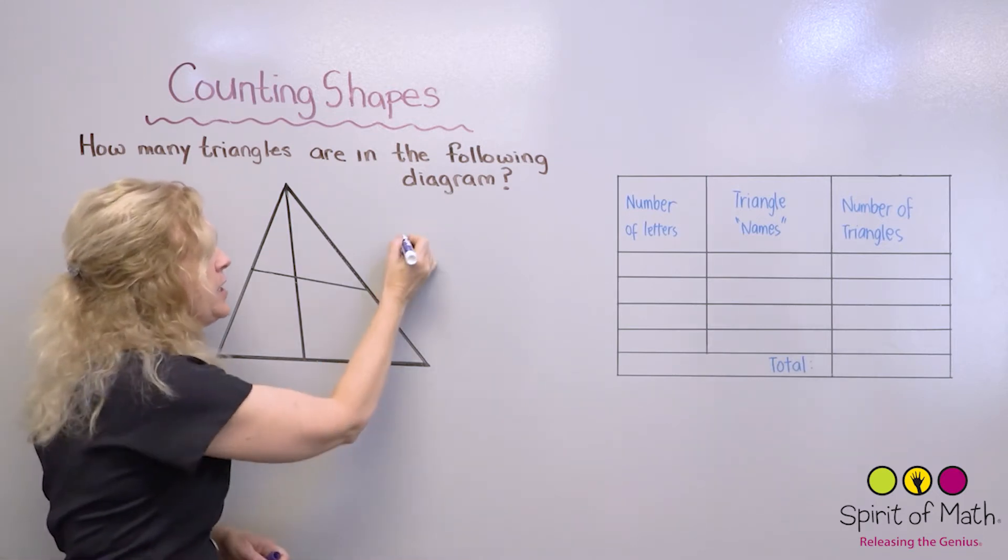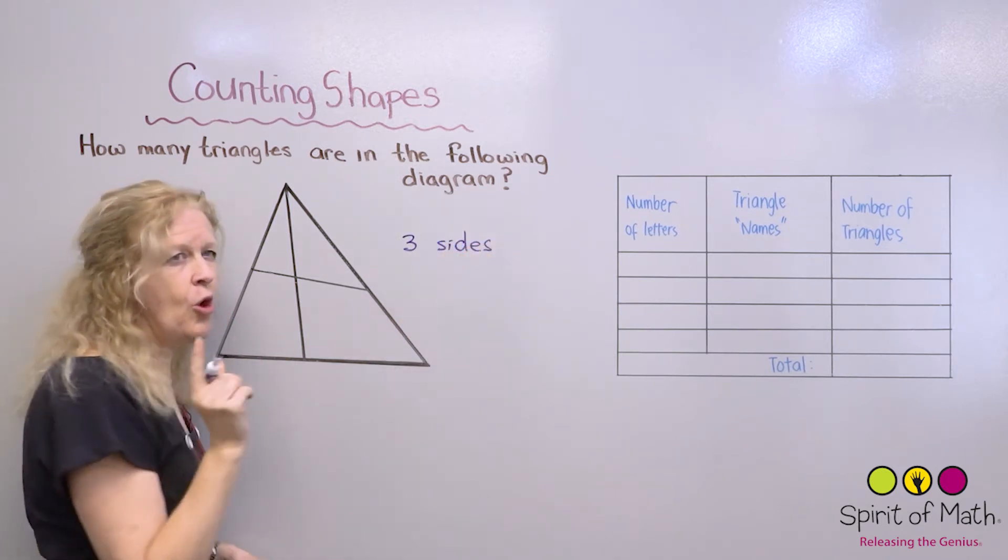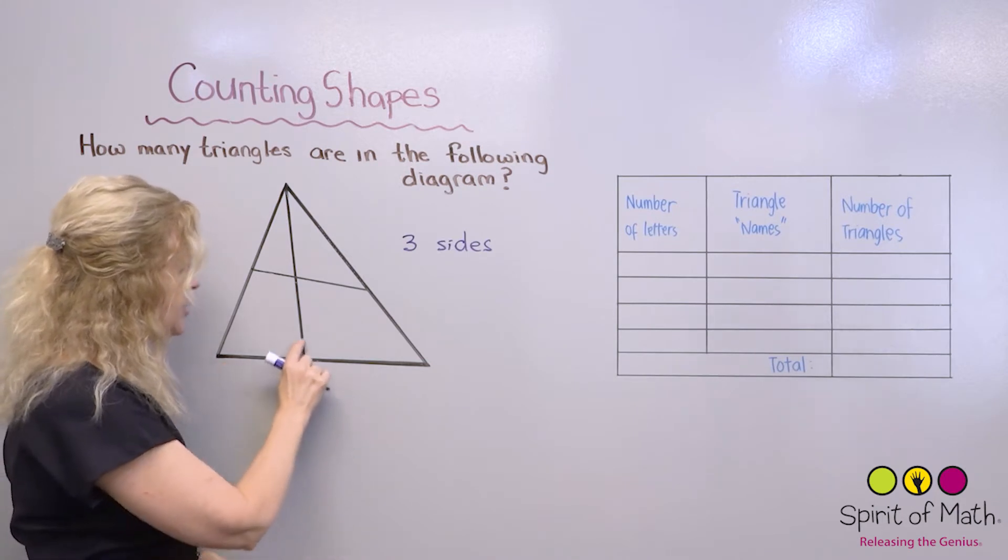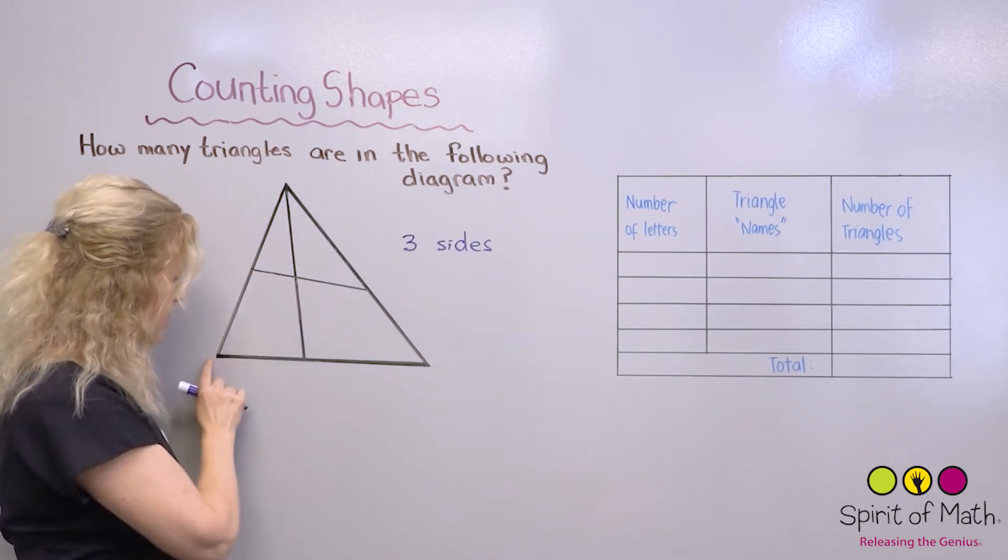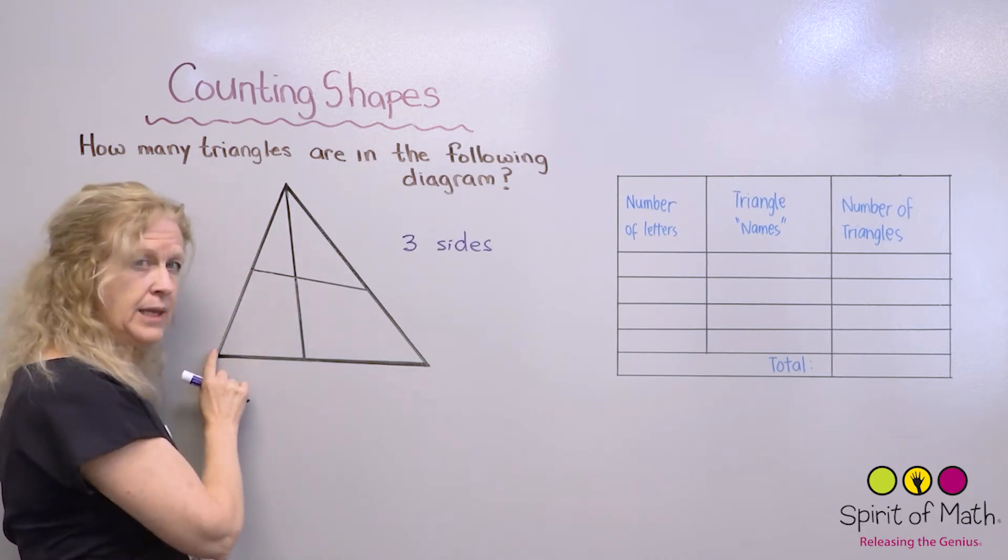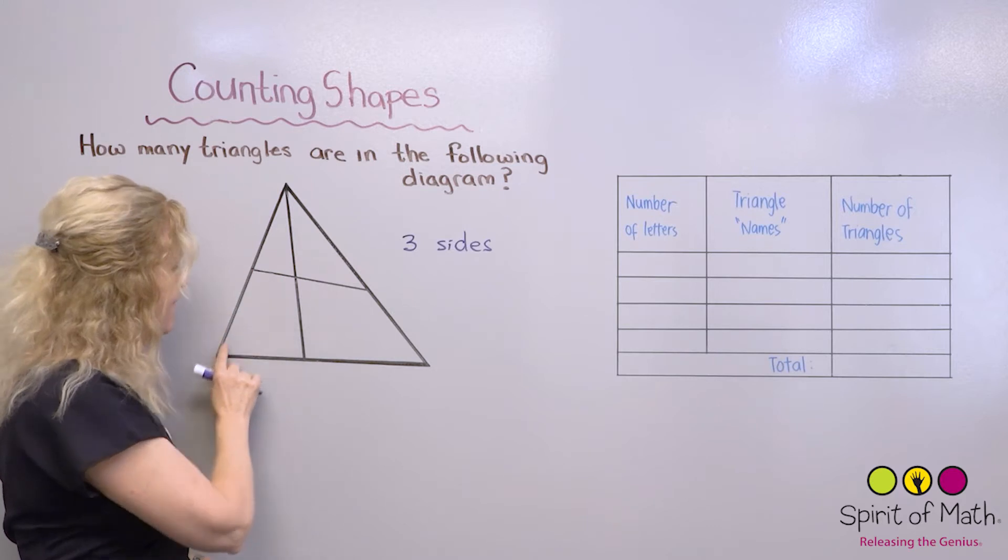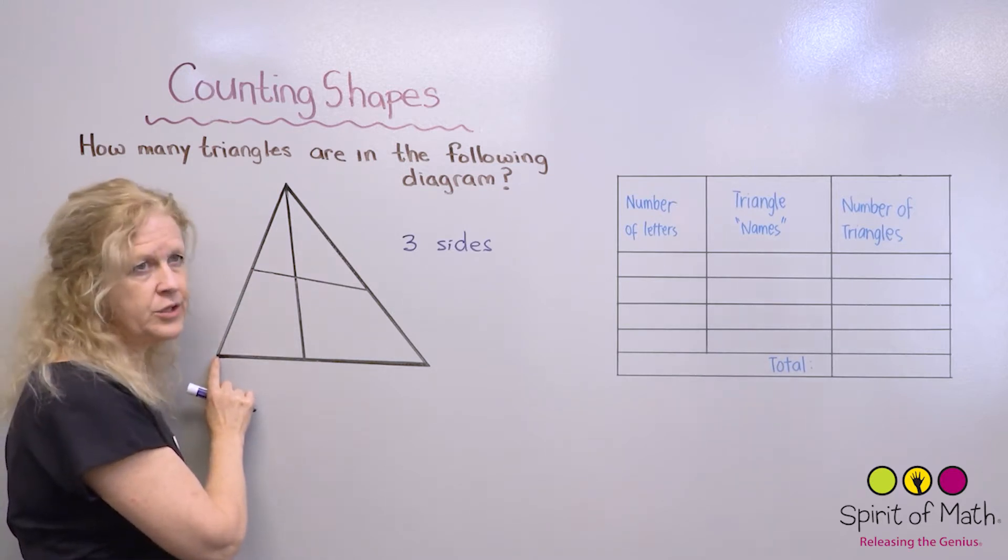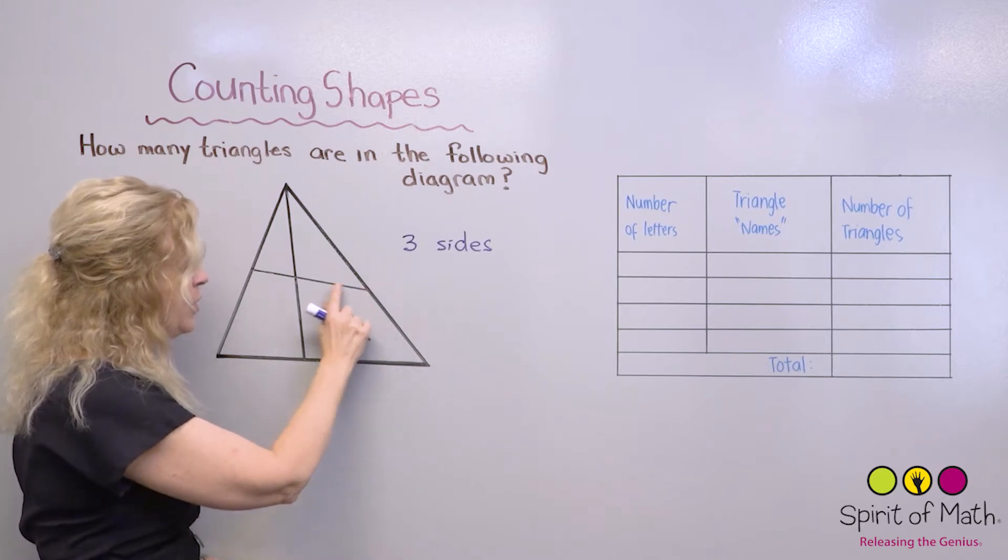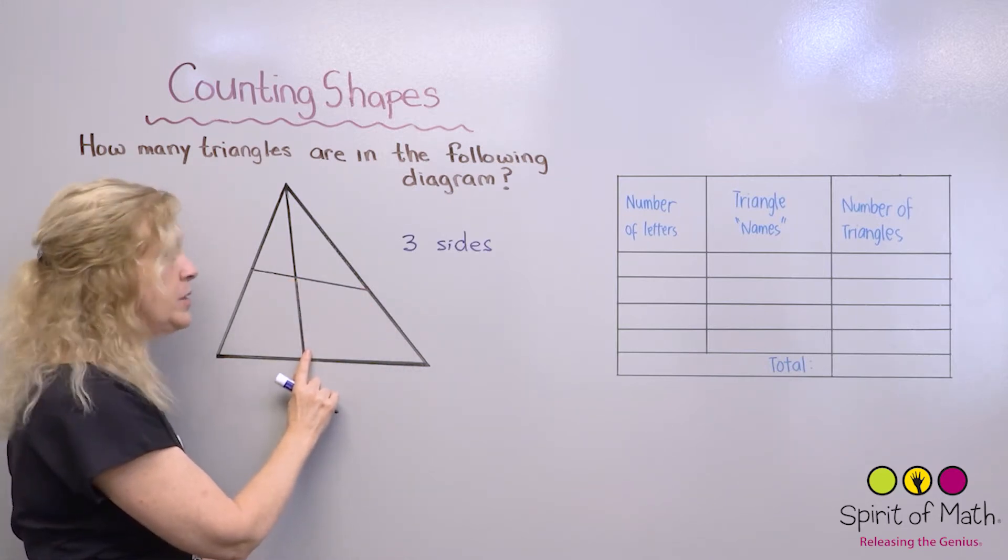Now, before we go any further, remember that a triangle has three sides. So make sure that all your shapes have three sides. Is this a triangle right here? If I was to trace over here? Let's see. One, two, three, four. No, that's not a triangle, so you can't count that. How about this one? One, two, three, four. That's not a triangle, so you can't count that.